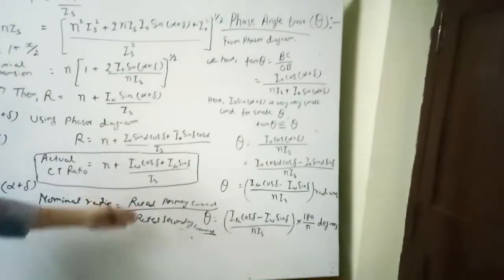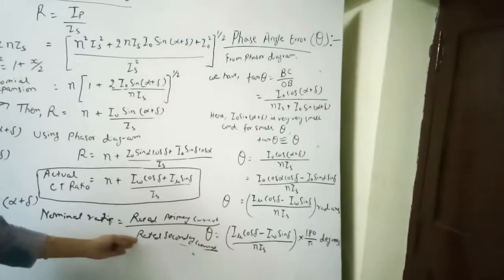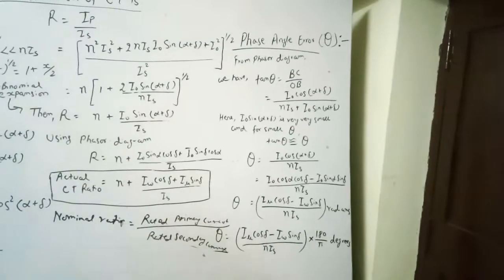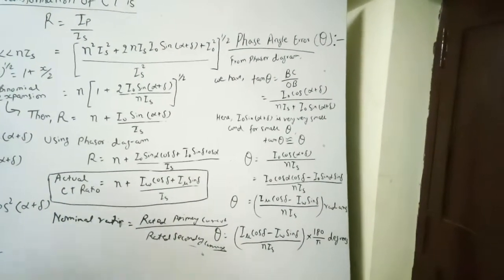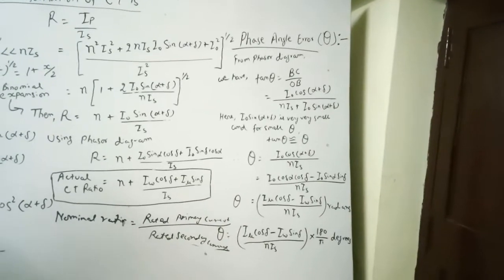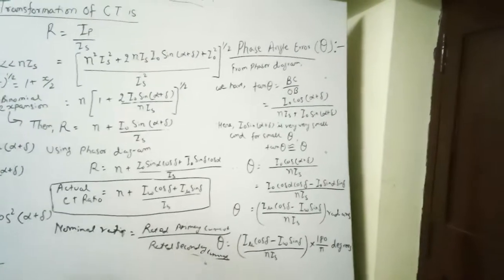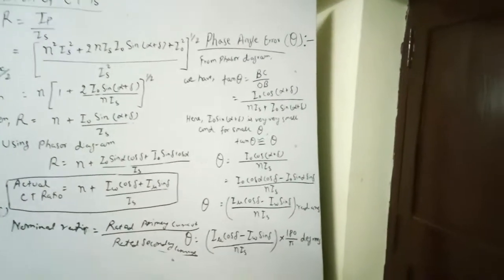From these two values — the actual ratio and the nominal ratio (rated primary current upon rated secondary current) — we calculate the percentage ratio error of the current transformer.